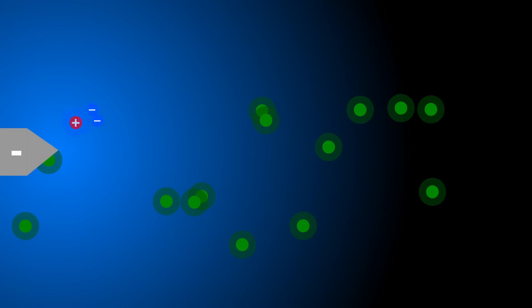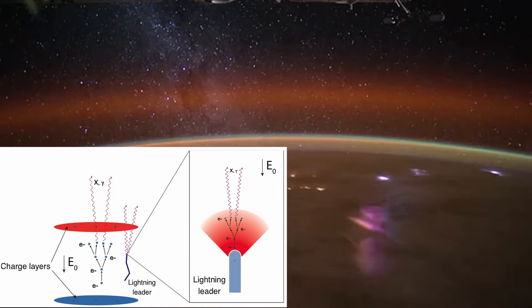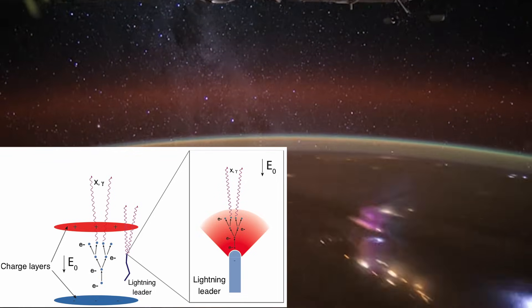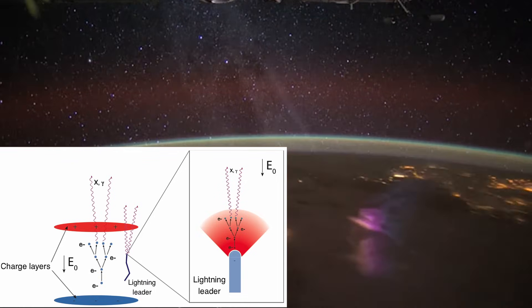This enhanced mobility enables them to accelerate within an existing electric field to energies far surpassing those of static electrons. Upon collision with an air molecule, such relativistic electrons can liberate additional relativistic electrons, setting up a cascade of runaway electrons.